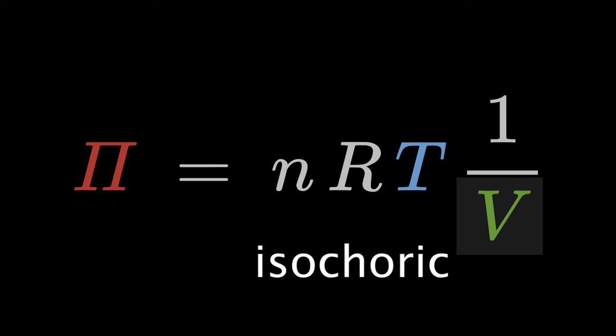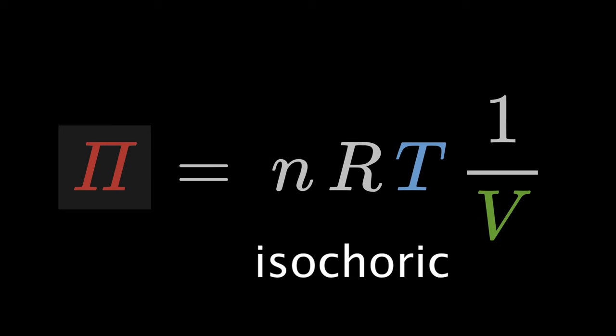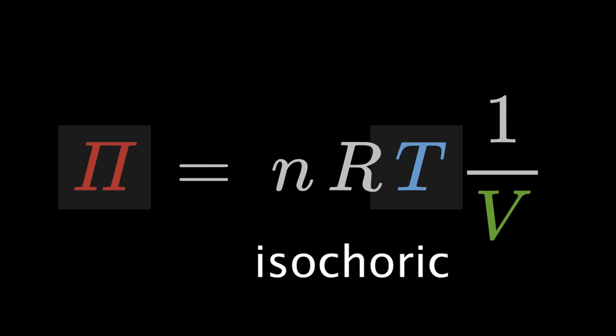During an isochoric process, the volume V of the gas remains constant. Then V, n, and r are constants in the gas law, and the pressure pi is proportional to the temperature T.